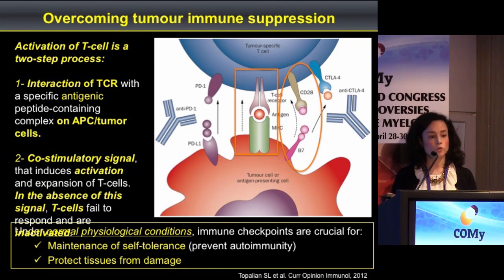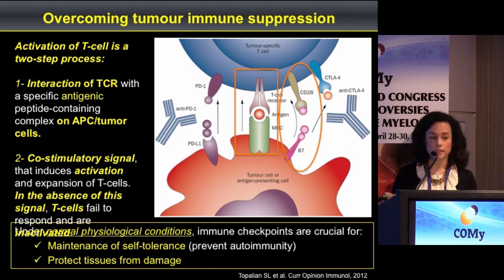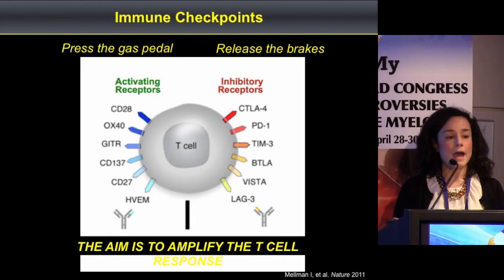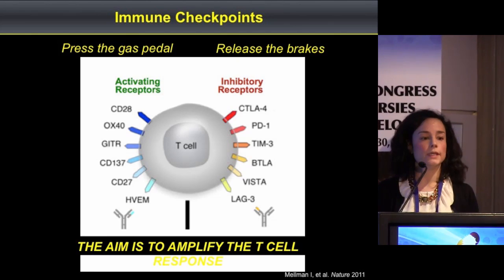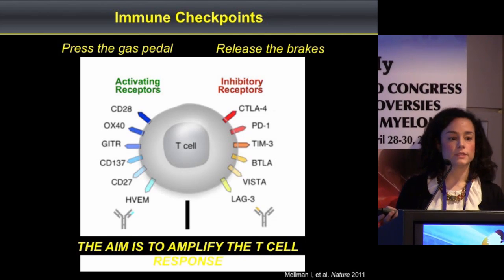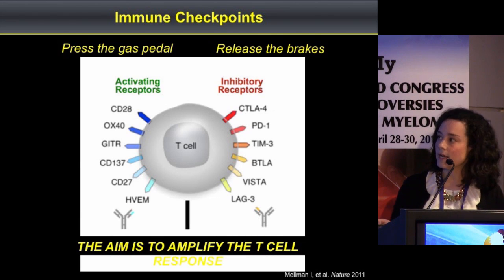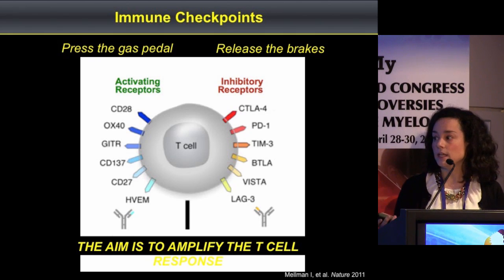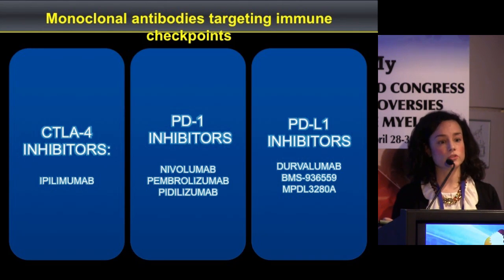These co-stimulatory and checkpoint receptors are important in physiological conditions to maintain self-tolerance and to protect tissues from damage. We can use agonist antibodies against activating receptors to press the accelerator on the immune response, or we can use blocking antibodies against inhibitory receptors to release the brake on T cells and amplify the T cell response. So far we have three classes of checkpoint inhibitors, all acting against inhibitory pathways: CTLA-4 inhibitors, PD-1 inhibitors, and PD-L1 inhibitors.